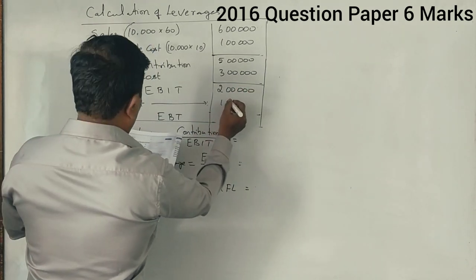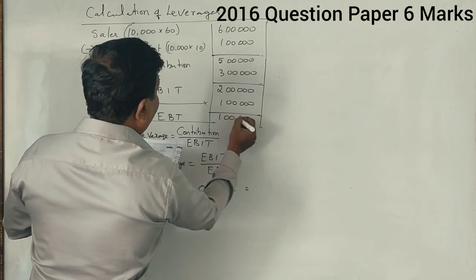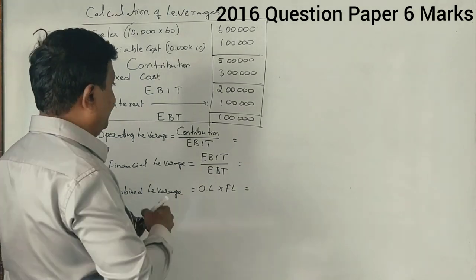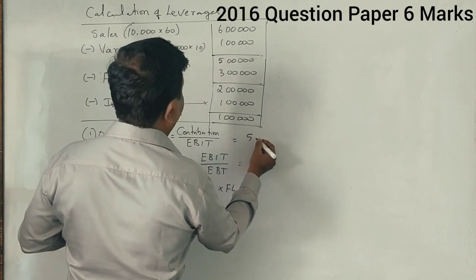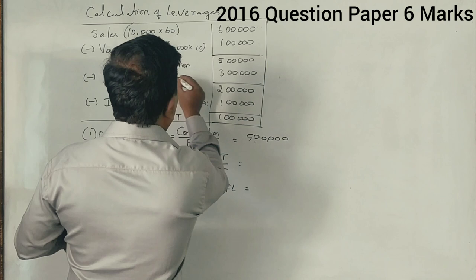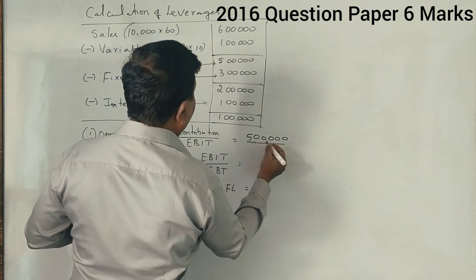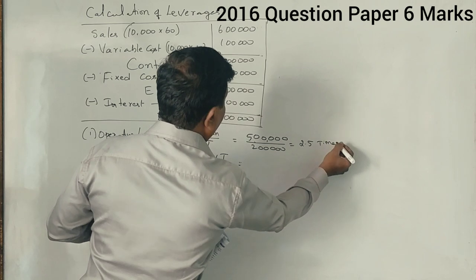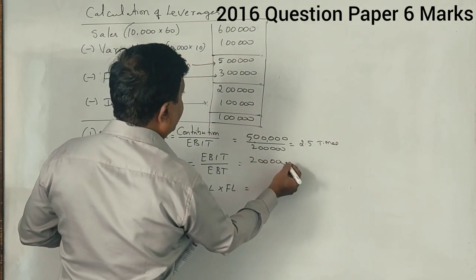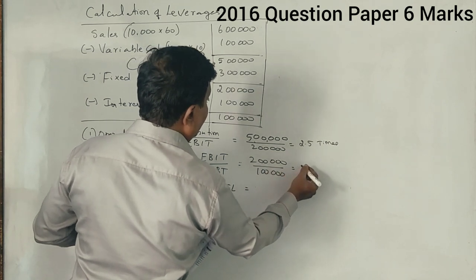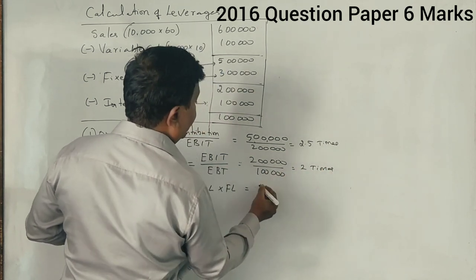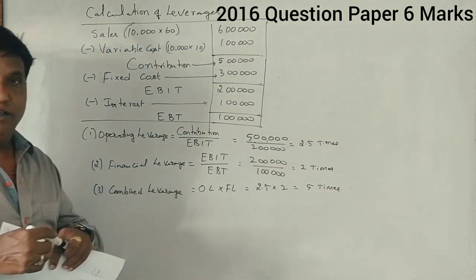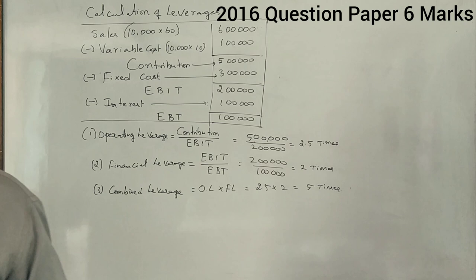Interest burden is 1 lakh rupees given in the question, so total EBT is 1 lakh. Now we can calculate the leverage easily. Contribution is 5 lakhs and EBIT is 2 lakhs, giving operating leverage of 2.5. EBIT is 2 lakhs and EBT is 1 lakh, giving financial leverage of 2. Combined leverage is 2.5 times 2. That's all. See how easily we have done. Got it?